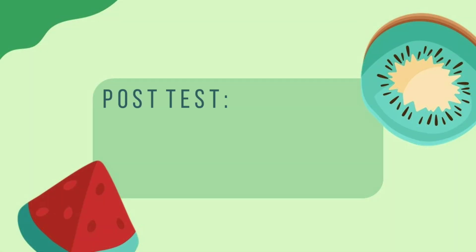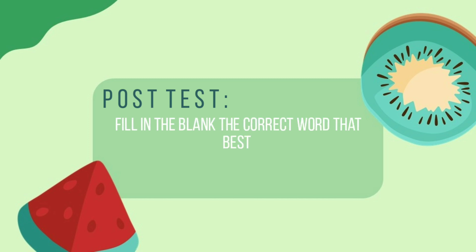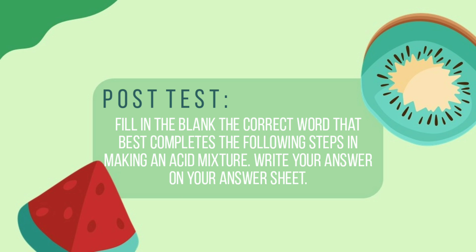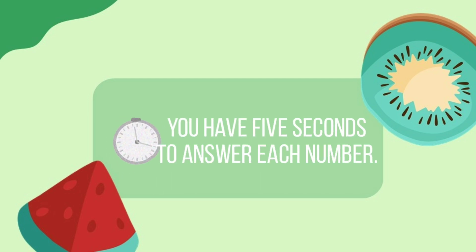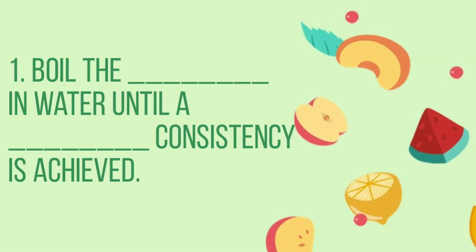And now for our assessment. You will answer the following questions to assess what you have learned today. Fill in the blank with the correct word that best completes the following steps in making an acid mixture. Write your answer on your answer sheet. You have 5 seconds to answer each number. Number 1: Boil the blank in water until a blank consistency is achieved. The answers are fruit and thick.